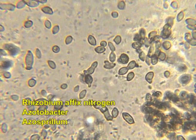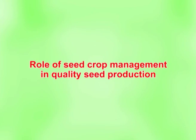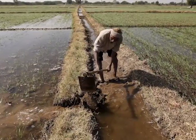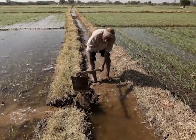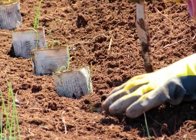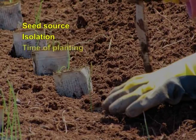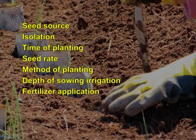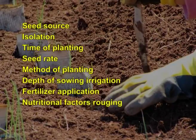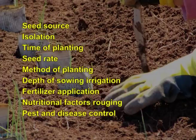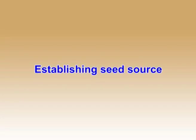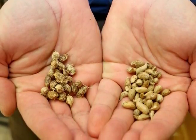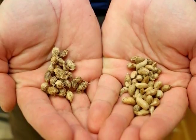Next, we can see production technology — that is, the role of seed crop management in quality seed production. Successful seed production requires application of good farming practices along with careful management of the crop. These factors include seed source, isolation, time of planting, seed rate, method of planting, depth of sowing, irrigation, fertilizer application and nutritional factors, roguing and pest and disease control. Establishing seed source: it is essential to make a list of breeder or breeding institutions for the supply of authenticated stocks of breeder seeds for further seed multiplication chain.